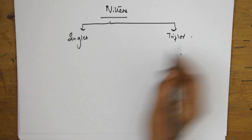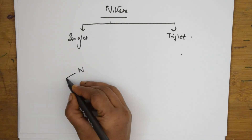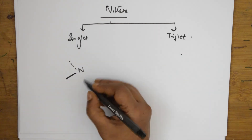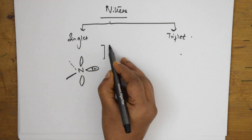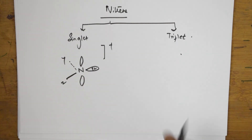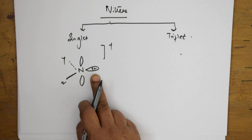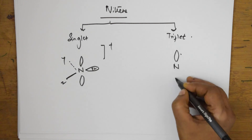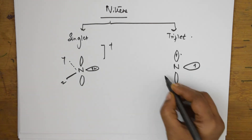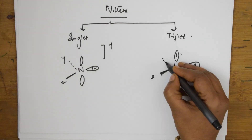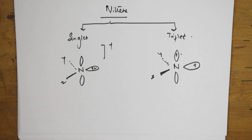In singlet nitrene, nitrogen is at the center with lobes above and below. In triplet nitrene, both electrons are present in two different lobes with the same spin. These are the structures of different reaction intermediates. I'll meet you again with the next concept where we will see questions based on reaction intermediates.